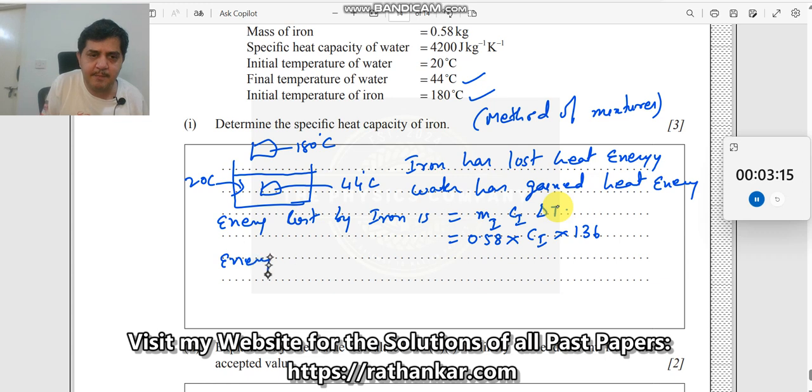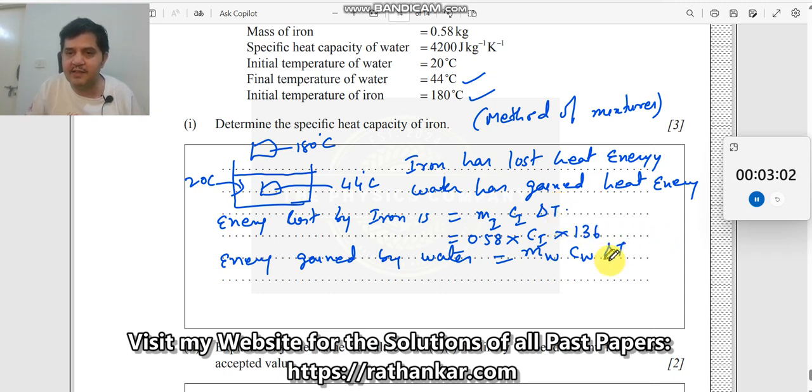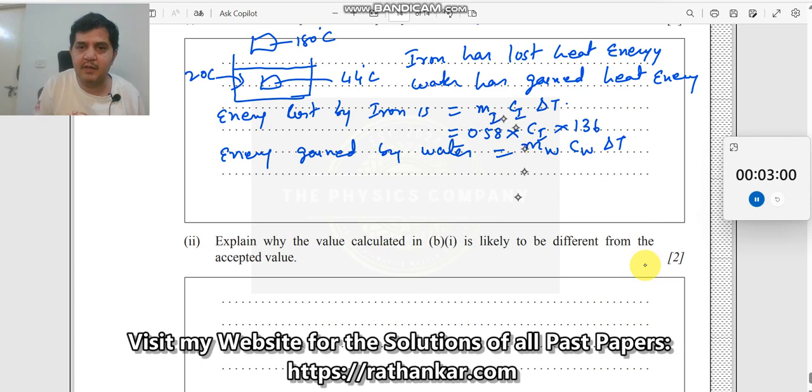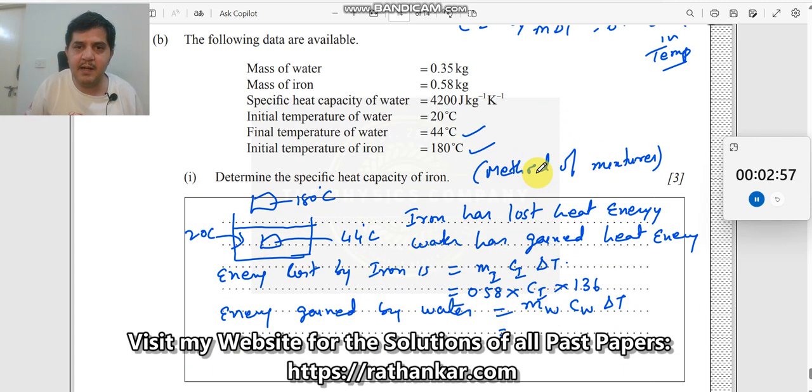Similarly, energy gained by water is equal to M water C water delta T. Now, this delta T that we have here and this delta T is not one and the same. Let us look at that. What is the mass of water? Mass of water is 0.35 kg. 0.35 kg multiplied by CW 4200 multiplied by delta T, change in temperature. Initial temperature was 20. Then temperature of water raised to 44. The difference is 44 minus 20, which is 24 over here.